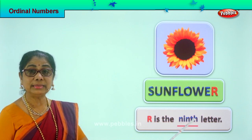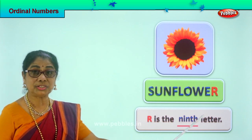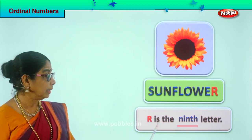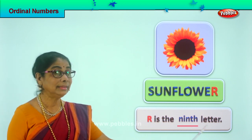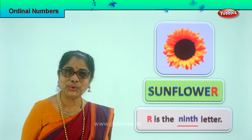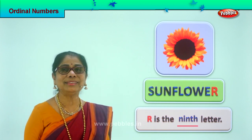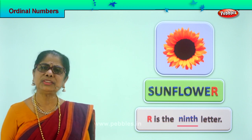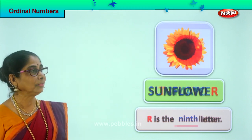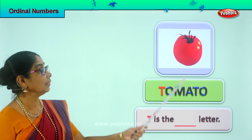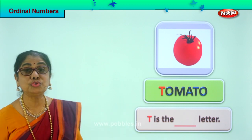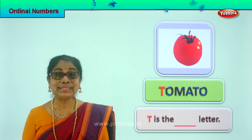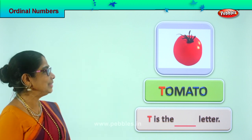R is the ninth letter, in the ninth position. Spell ninth: N-I-N-T-H. Read the full sentence: R is the ninth letter. Did you enjoy? Good — we are learning ordinal numbers. Let's look at a new picture. What do you have here? Juicy tomato! Yes, juicy tomato. You love to eat tomatoes.